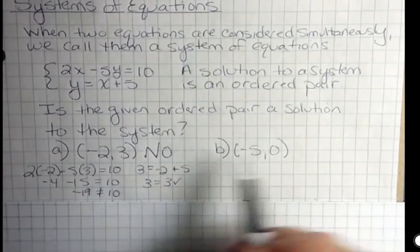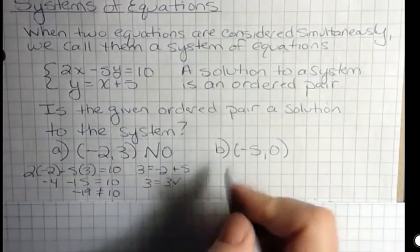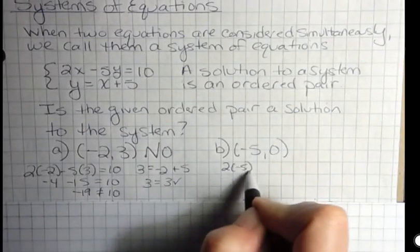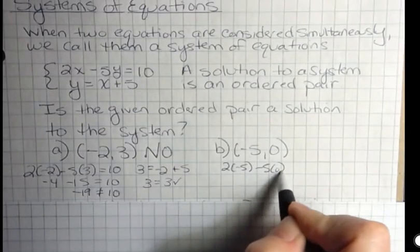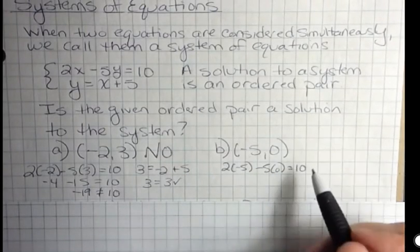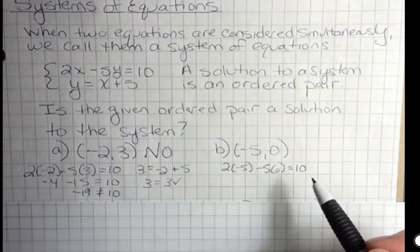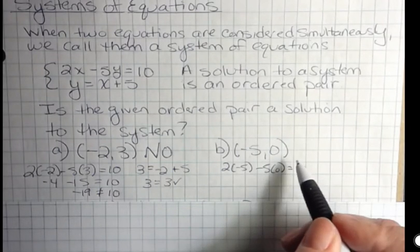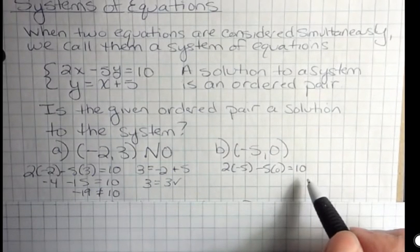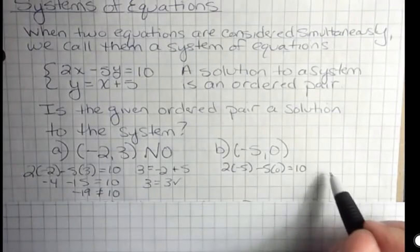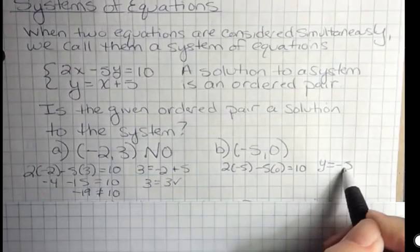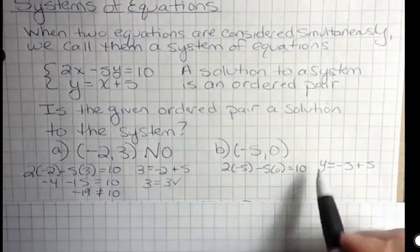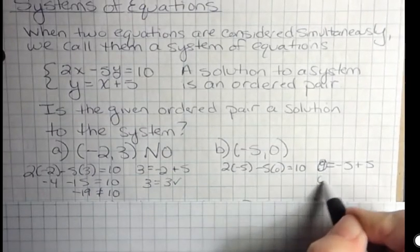Let's try the second one. I've got two times negative five minus five times zero, that's supposed to be ten. And I think I was supposed to have, shoot, and the other one is y equals negative five plus five. Well, y is zero, so zero equals zero.